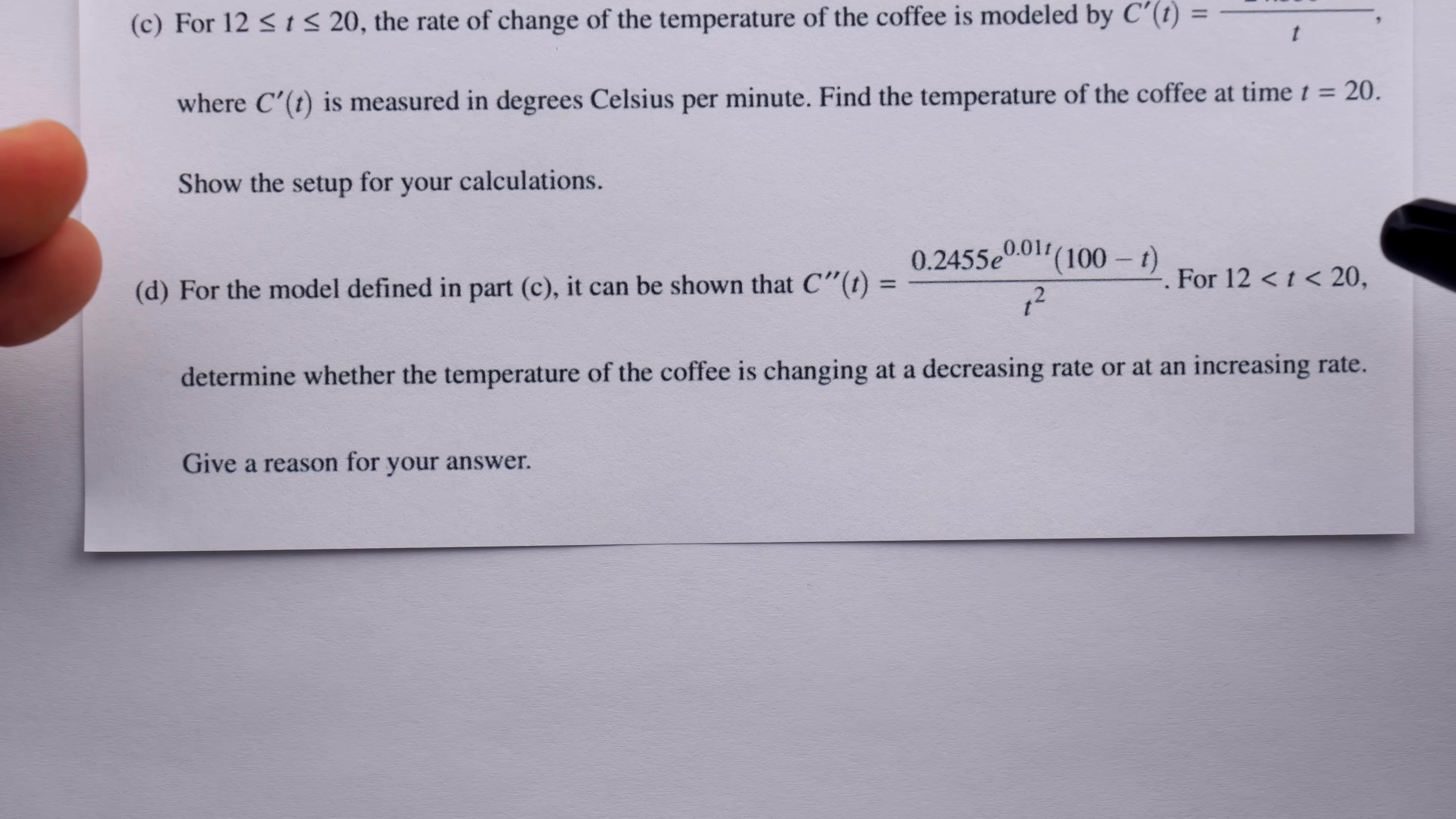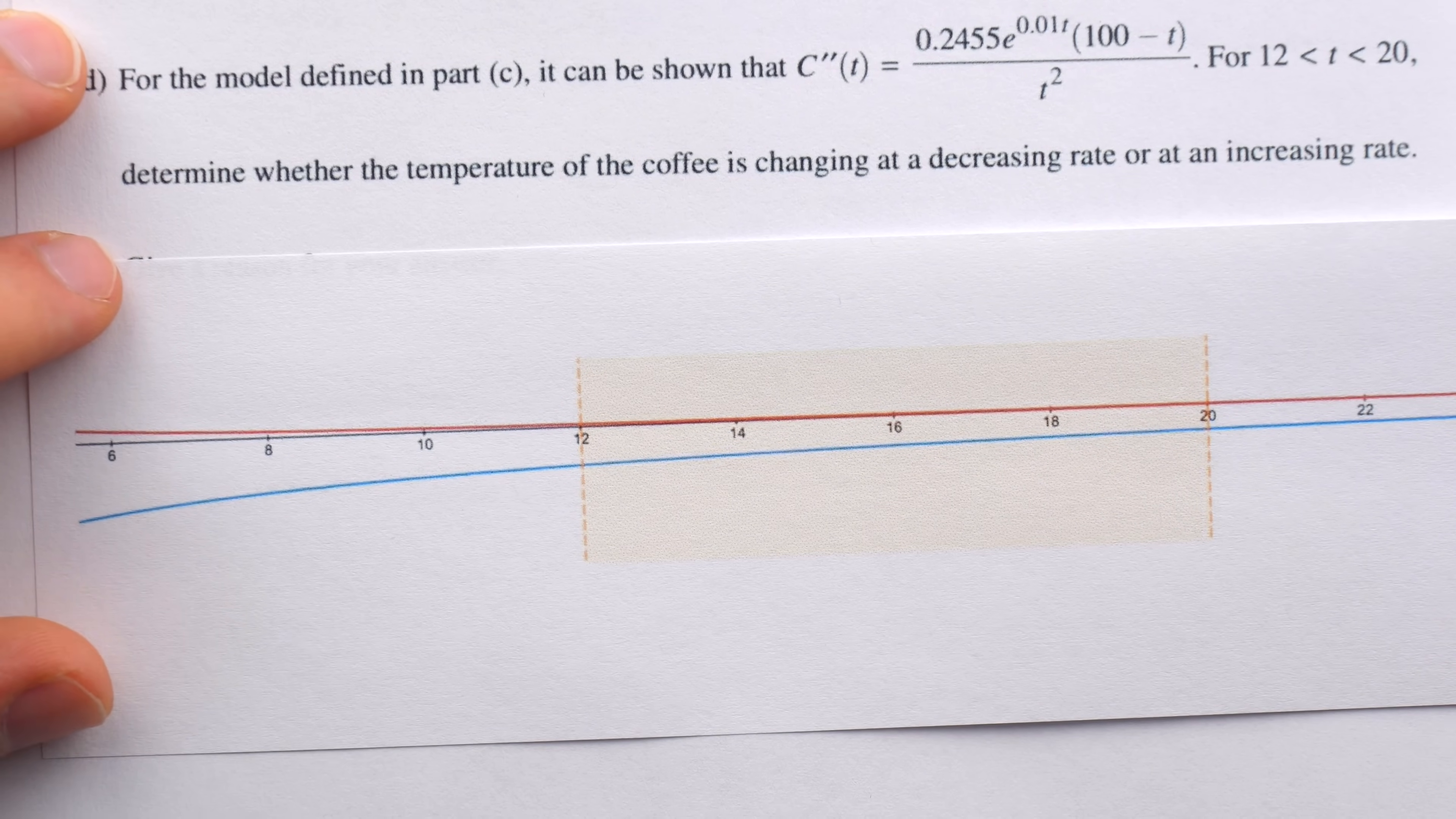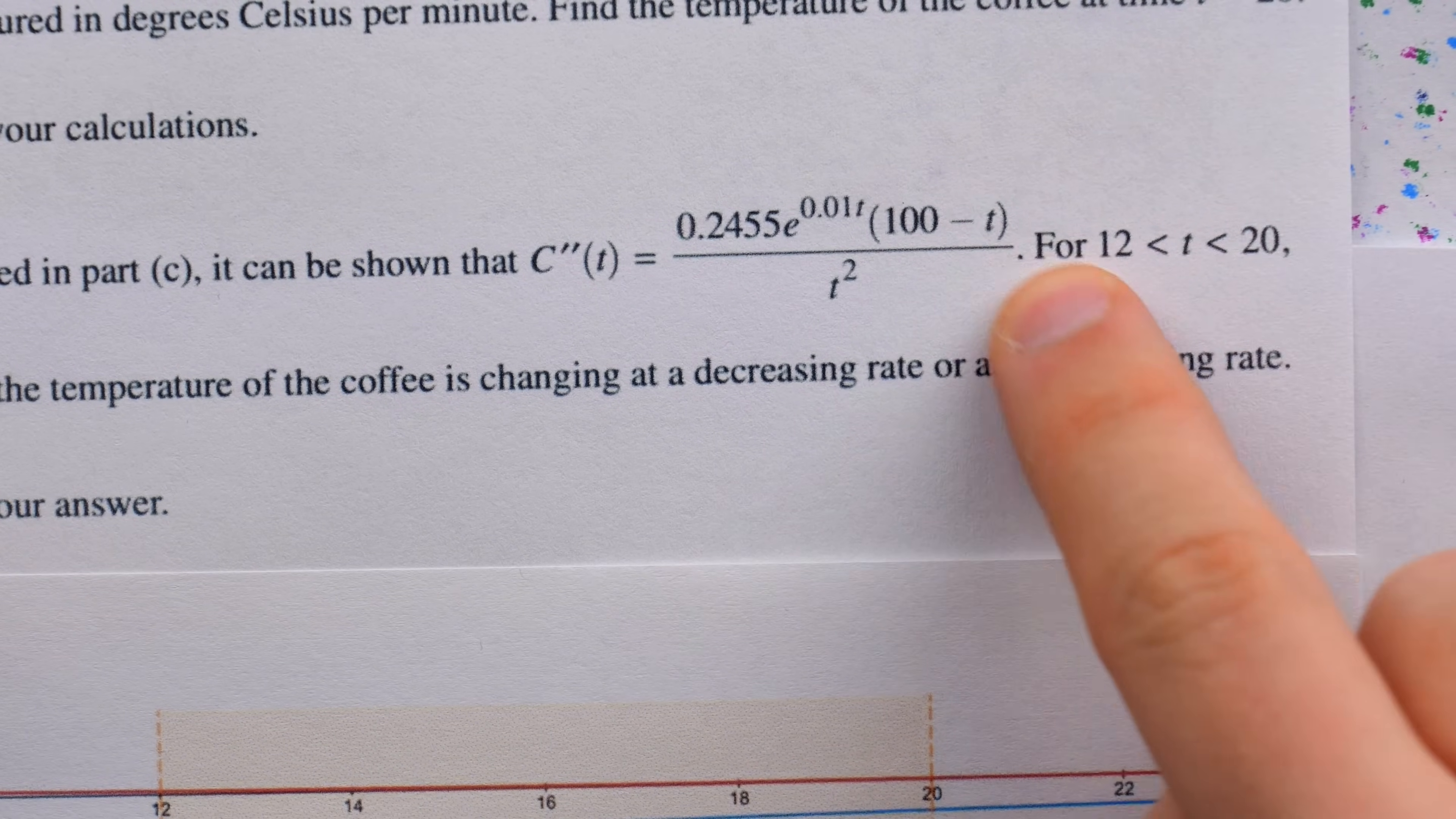So, this question was part of the graphing calculator section. Thus, what many students did was graph the second derivative, which is a good idea. And here's what you would see if you graphed the second derivative. The second derivative is in red, you can see that here. I've also graphed the first derivative in blue, and this orange band just shows t between 12 and 20, which is the interval of focus for this question.